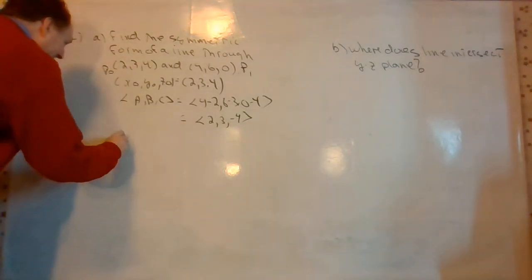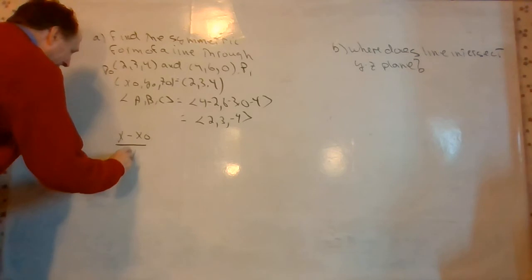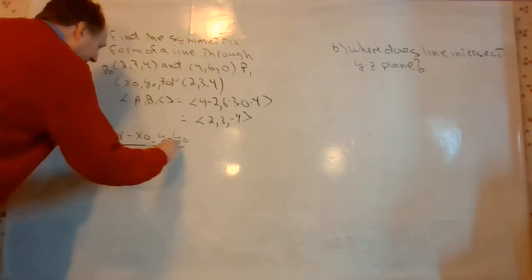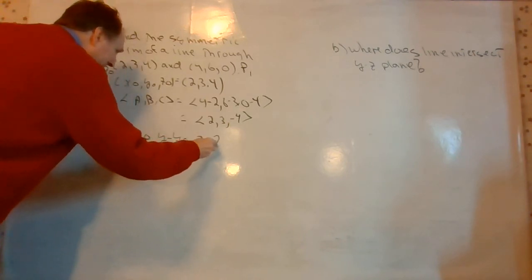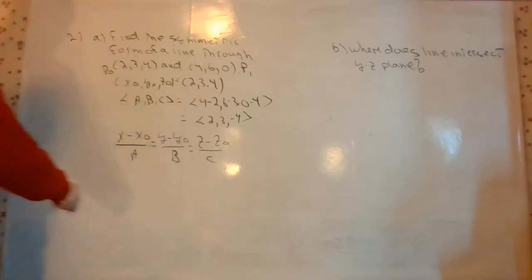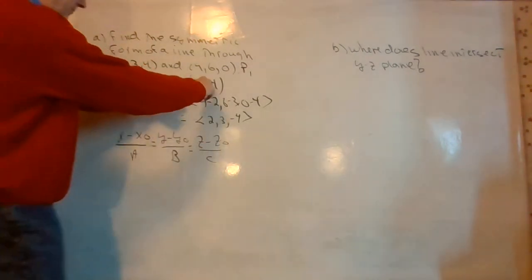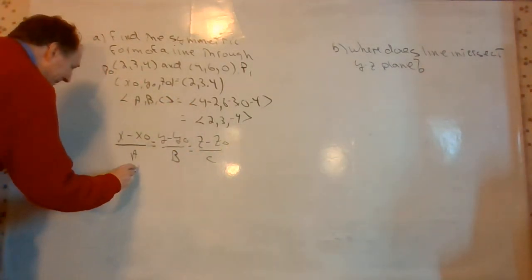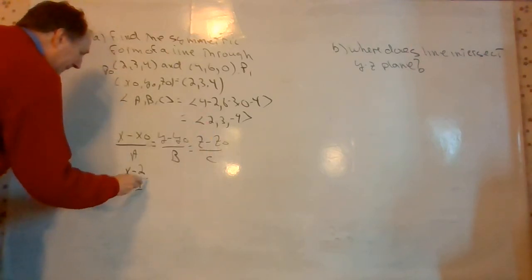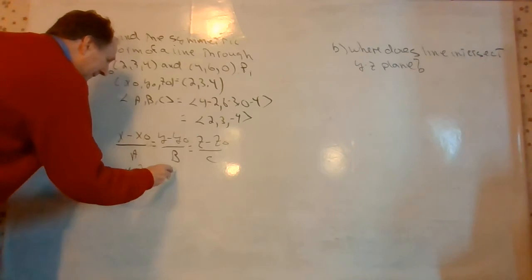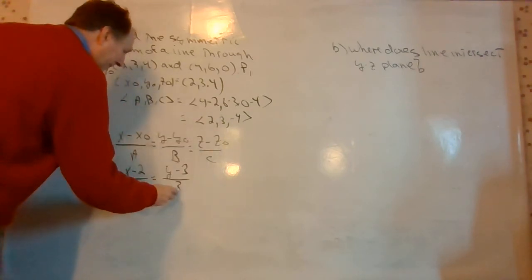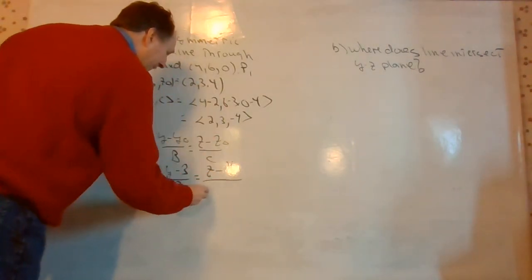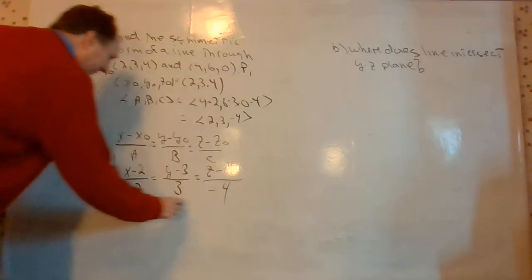The symmetric form is x minus x0 over A equals y minus y0 over B equals z minus z0 over C. Plugging in our point and direction vector, we get: x minus 2 over 2 equals y minus 3 over 3 equals z minus 4 over negative 4. That's our symmetric form.